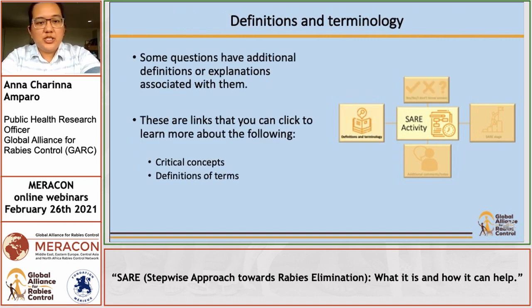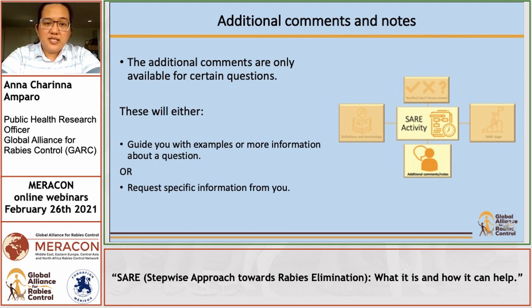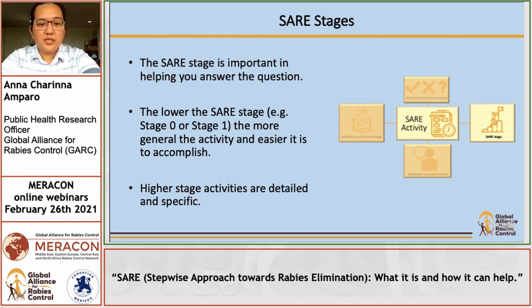For definitions and terminology, there are some questions that have additional explanations, with links provided to critical concepts or definitions of terms that you can click. There are also some questions that have additional comments, which will either give you examples, more information, or request specific information from you. The SARA stage is important to note because it will help you in answering the question. The lower the stage — for example stage 0 or stage 1 — the more general the activity and the easier it is to accomplish. The activities in the higher stages are more detailed and more specific.